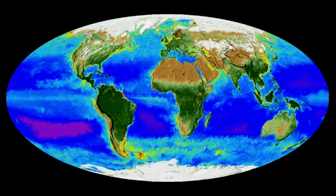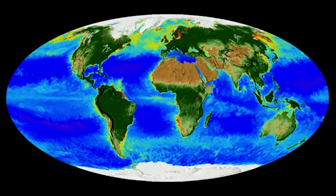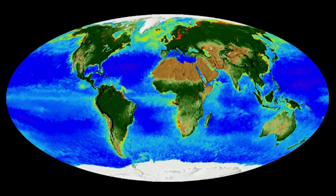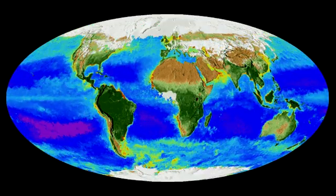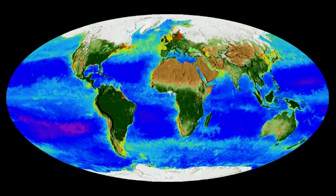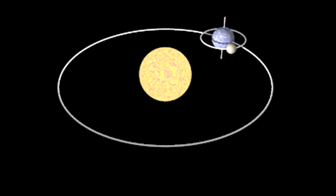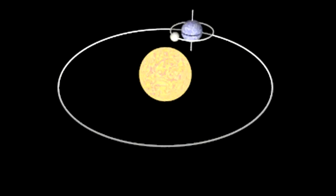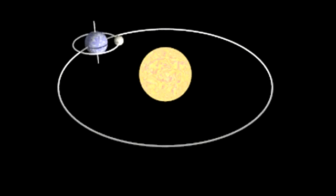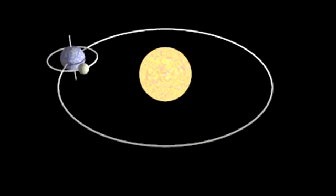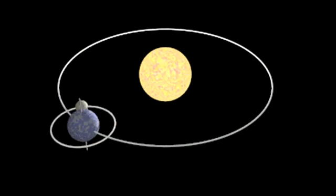depending on the time zone. The date of the equinoxes and solstices varies because a year in our calendar does not exactly match the length of the tropical year — the time it takes the Earth to complete an orbit around the Sun.